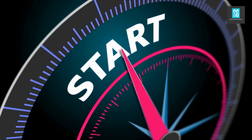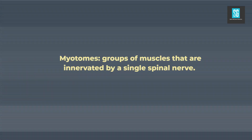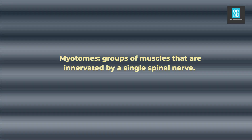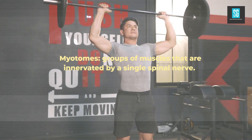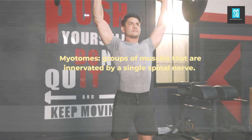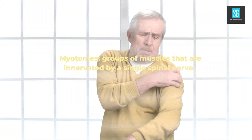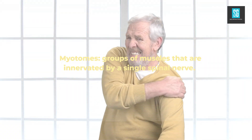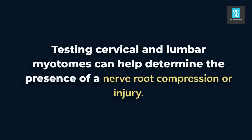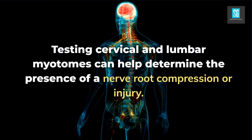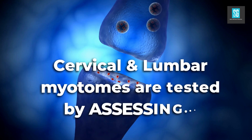Let's discuss myotomes. Myotomes are a group of muscles that are innervated by a single nerve. For instance, the C5 nerve assists in shoulder abduction. Therefore, if the C5 nerve is compromised, the patient will have difficulty abducting their arm. By testing cervical and lumbar myotomes, we can determine the presence of a nerve root compression or injury.